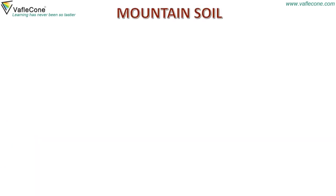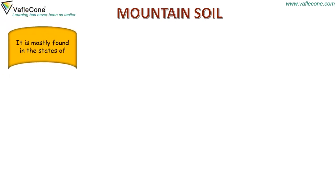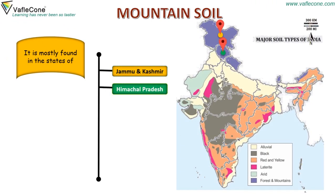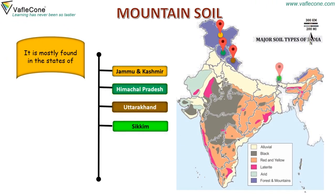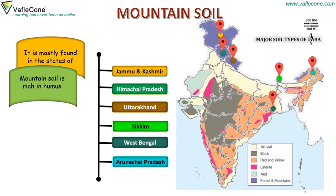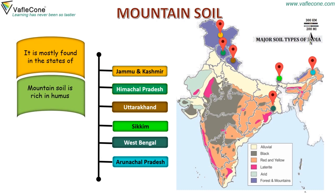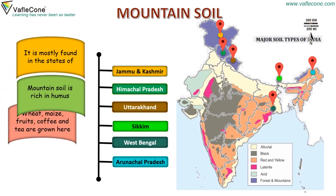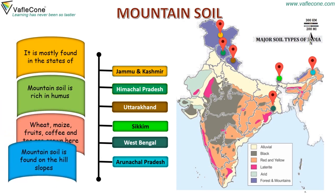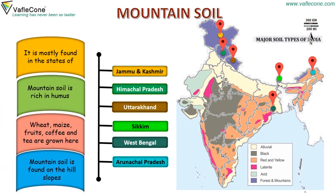Mountain soil. It is mostly found in the states of Jammu and Kashmir, Himachal Pradesh, Uttarakhand, Sikkim, West Bengal and Arunachal Pradesh. Mountain soil is rich in humus and is found on the hill slopes. Wheat, maize, fruits, coffee and tea are grown here.